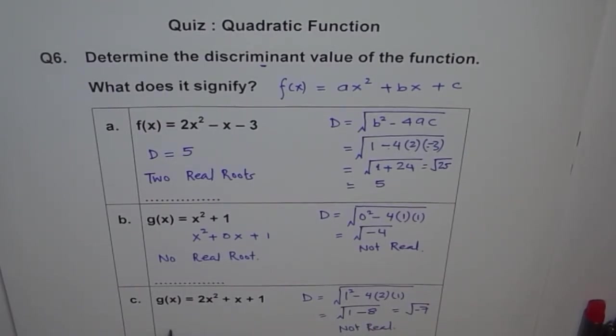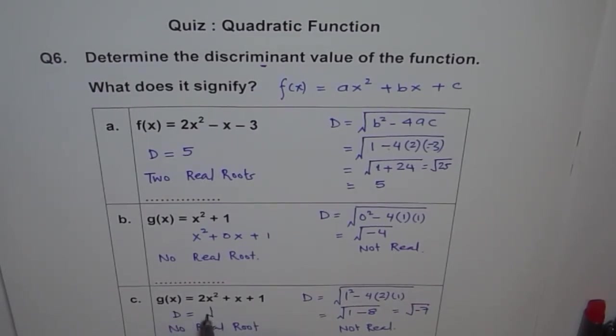Therefore, we get no real root. The discriminant is not real. We can say D = √(-7). For part B, we could write discriminant equals √(-4).